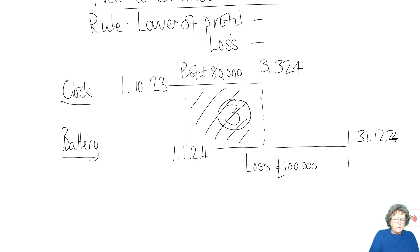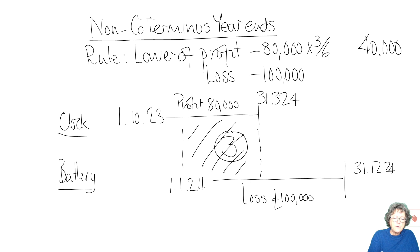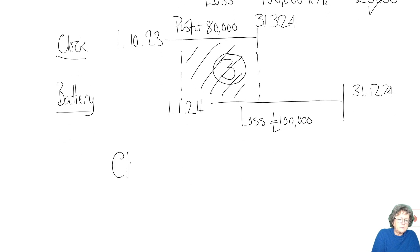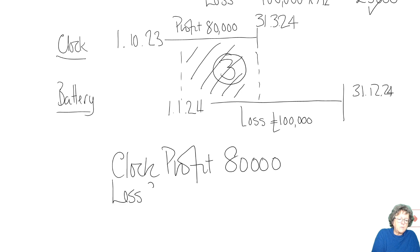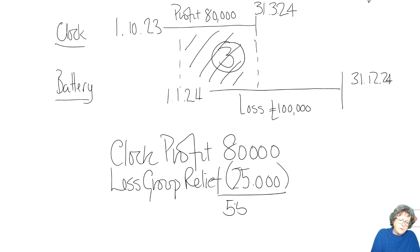The rule is: it's the lower of the claimant company's profit and the surrendering company's loss, both time-apportioned to the overlap period. The claimant's profit is £80,000 times three-sixths (half of the six-month period) = £40,000. The loss is £100,000 times three-twelfths = £25,000. The lower amount is £25,000. So in Clock's pro forma, we show the profits less group relief of £25,000, giving a TTP of £55,000.